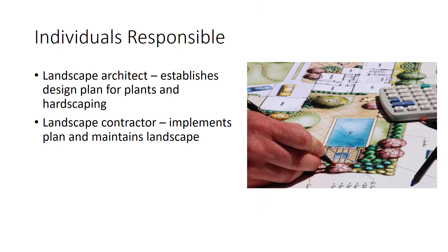For a landscape to be successful, it must start with a well-conceived design, followed by the proper installation and maintenance. The landscape architect establishes a design plan for plants and hardscaping features such as pools and patios. The landscape architect discusses the client's desires, implements a site plan and planting plan for a given location, which provides detailed guidelines on how to install the landscape, and oversees the project until completion. A site plan is a drawing indicating the location of plants and hardscaping objects in the landscape. The planting plan is a drawing that uses symbols to specify the types and names of plants, their quantities, and their locations in the landscape. The landscape contractor implements the planting plan and maintains the landscape.